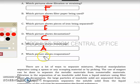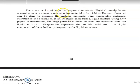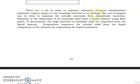For letter F, the answer is figure D. Here are the separating techniques of a mixture: physical manipulation — just using a spoon, scooping, or picking; using a magnet to separate metallic from non-metallic materials; filtration using filter paper; decantation, like separating rice from water; and evaporation, like separating salt from water in seawater.